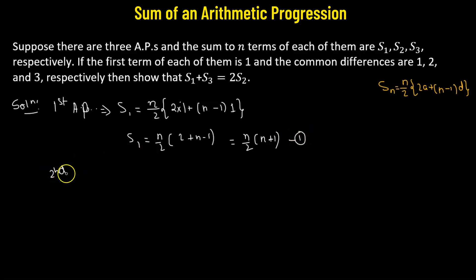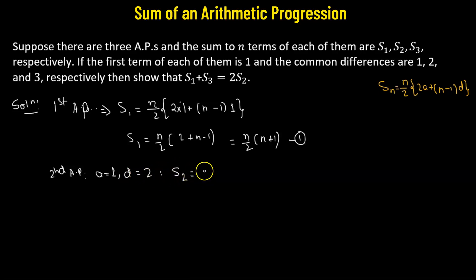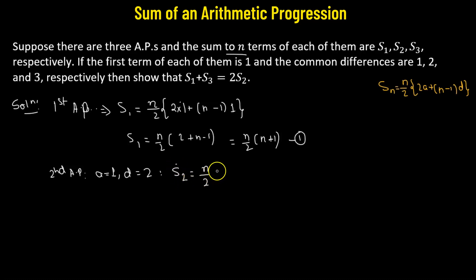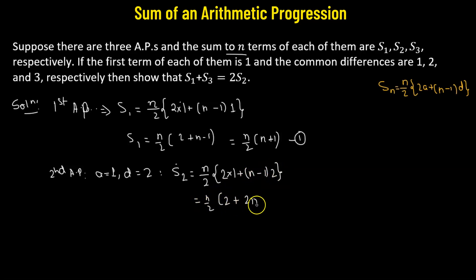For the second AP, the first term equals 1 and the common difference is 2. So S2 — which is the sum to n terms, not the sum to the second term — equals n over 2 multiplied by 2 times 1 plus n minus 1 times 2, which gives n over 2 multiplied by 2 plus 2n minus 2, and this simplifies to n squared. This is equation 2.